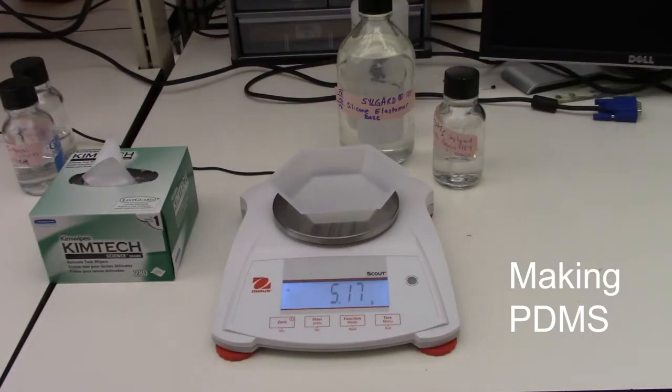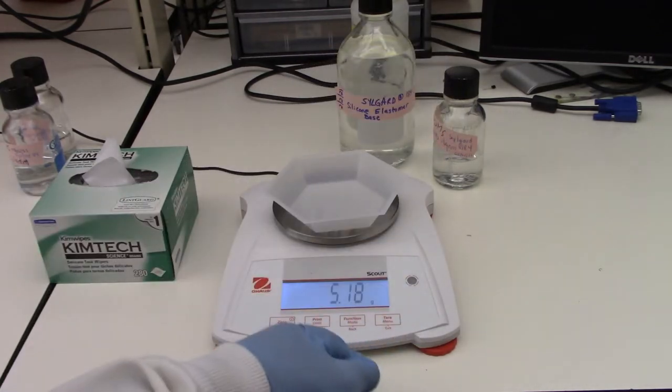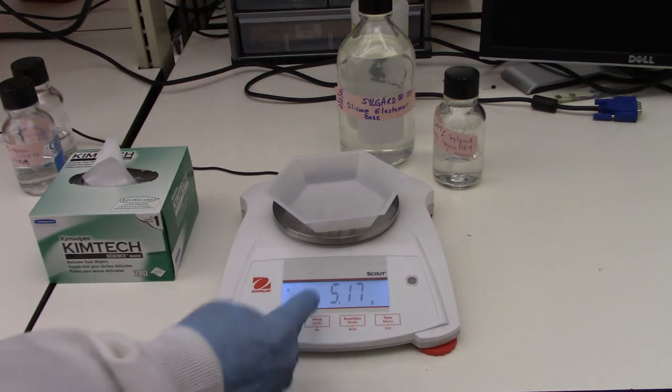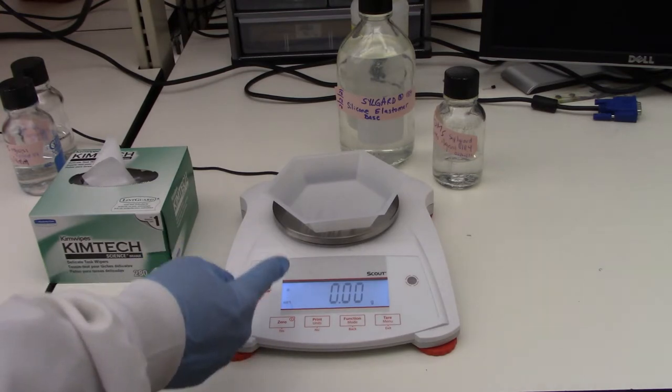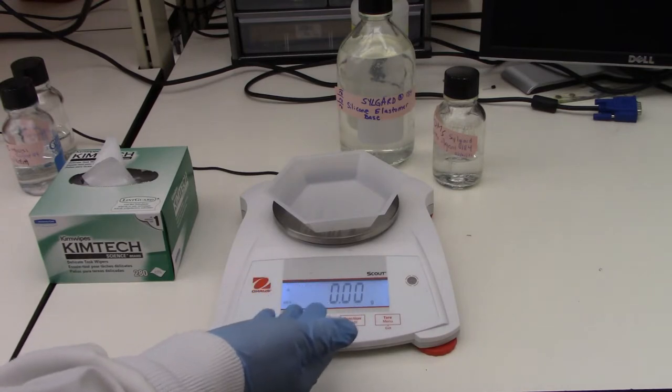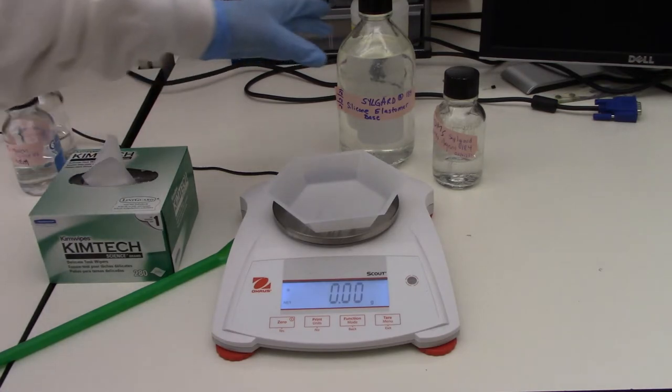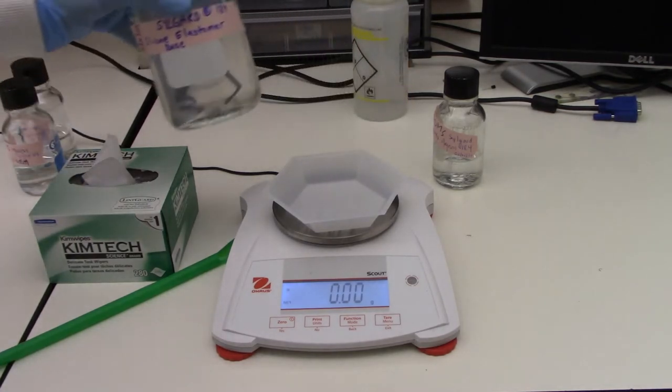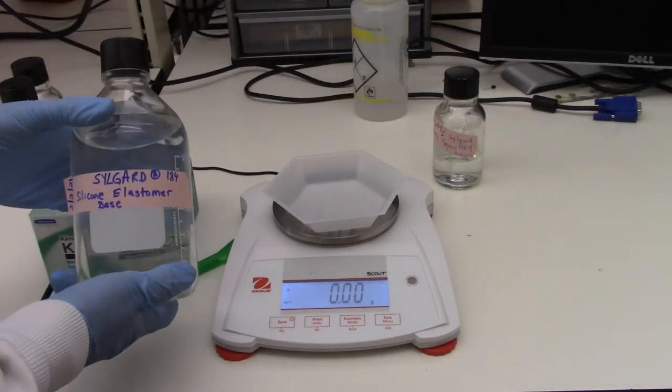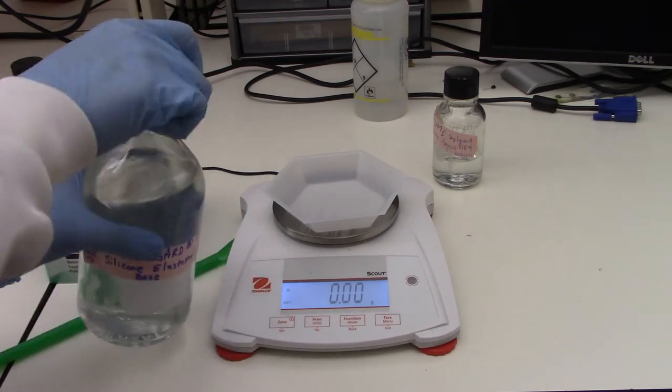To get started with making our PDMS-based device, first we're going to take a weigh boat, put that on the scale. With the weigh boat on, we're going to tare or you can press zero. Basically, we want to weigh out the appropriate amount of elastomer or PDMS based on the weight. And so the ratio that we want to use is a 10 to 1 ratio. So I'm going to start off pouring the PDMS base and I'll pour 30 grams.